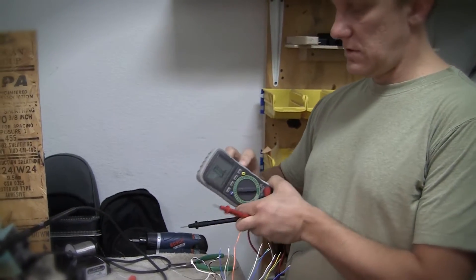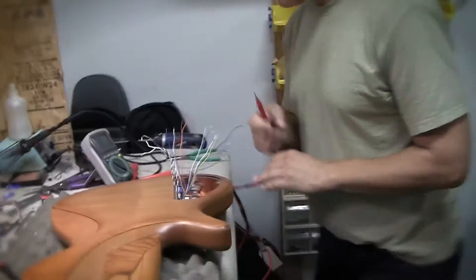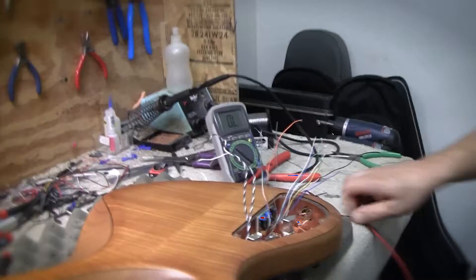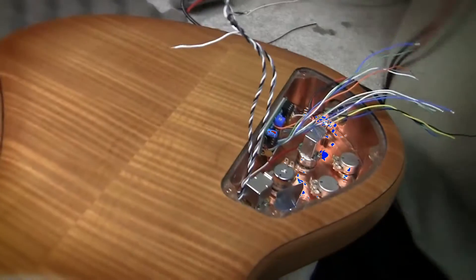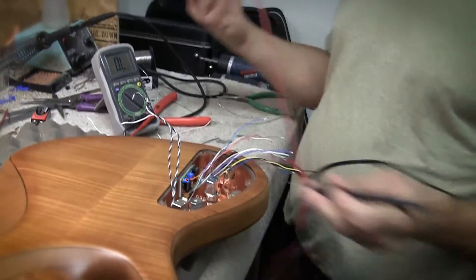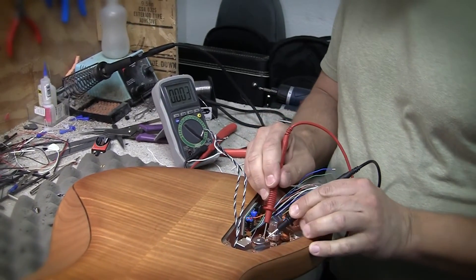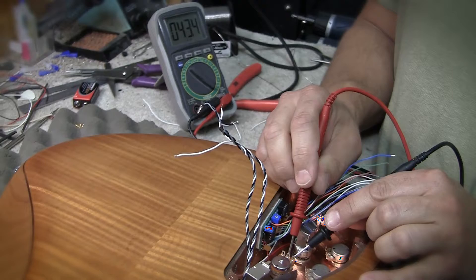So we set it to impedance. Then I take my blend pot, I've got it centered, it's in the detent. So now on this top row of lugs, I'm going to check the outside, this side, and I got 43k ohms.